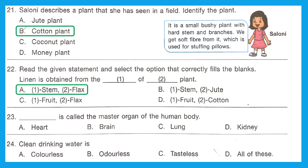Question 23: Dash is called the master organ of the human body. What controls our body? It is our brain. The brain is called the master organ of the human body. Option B is the right answer. Question 24: Clean drinking water is colorless, odorless, tasteless, or all of these? The right answer is option D — all of these — because clean drinking water is colorless, odorless, and tasteless.